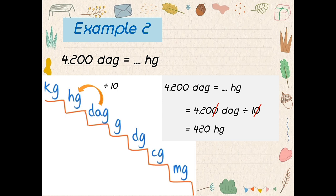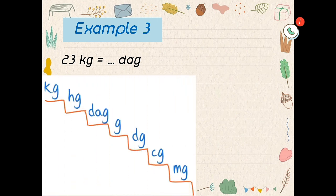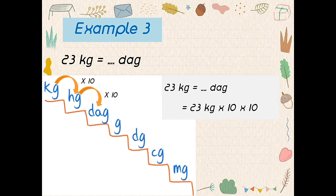Next, example number three: 23 kilogram, how many dekagram? From kilogram to dekagram — up or down? Good, down. How many? Two. So, times by 10, one, two. The answer: 23 kilogram times 10 times 10 is 2300 dekagram.